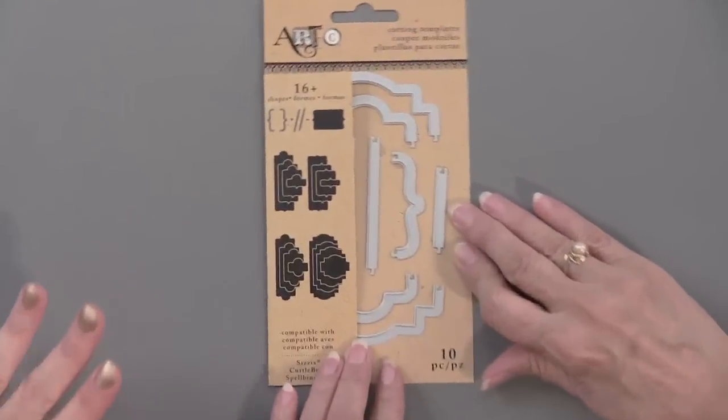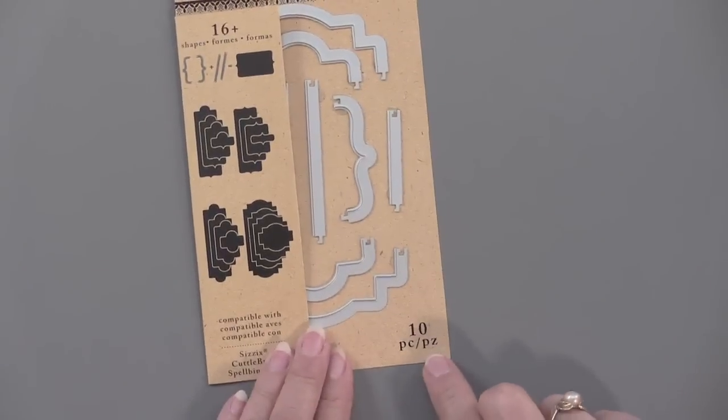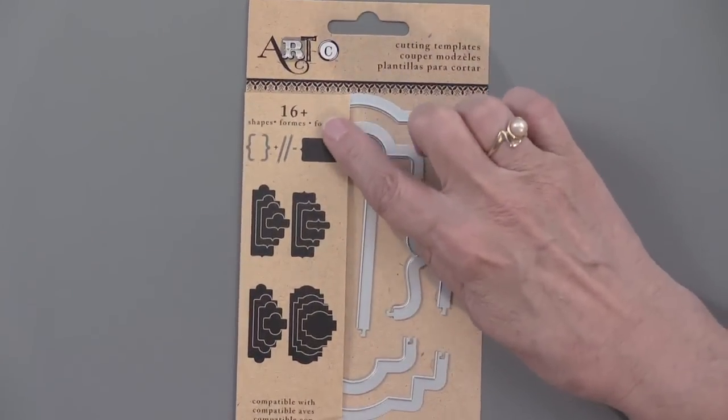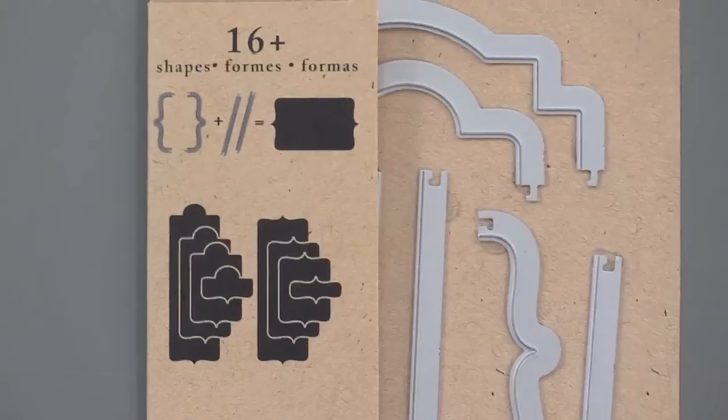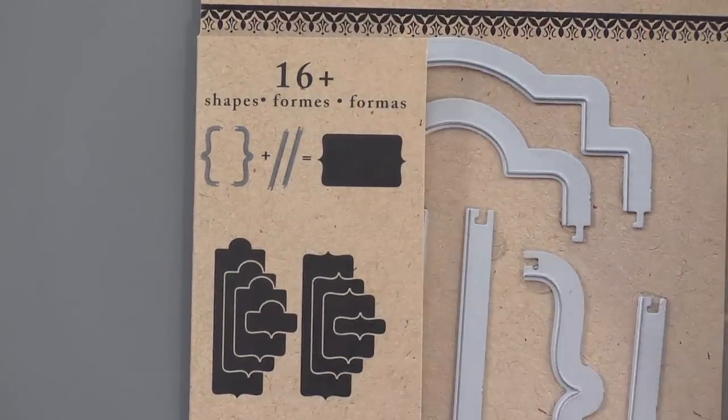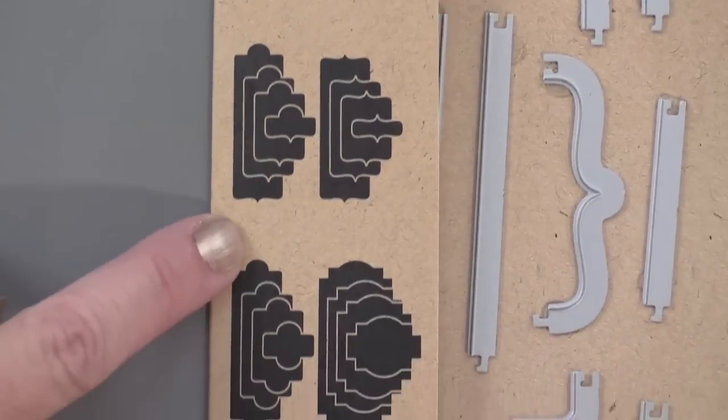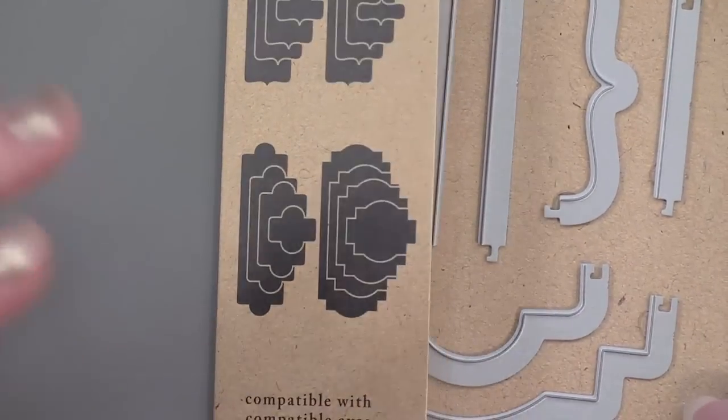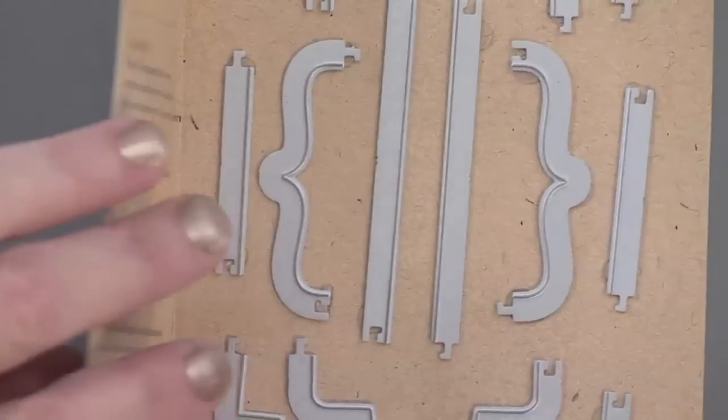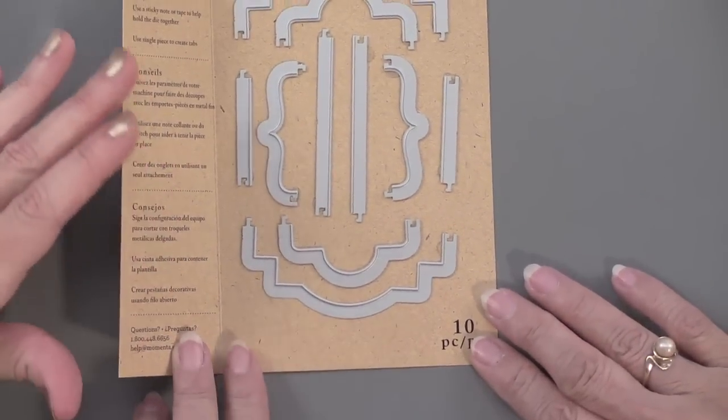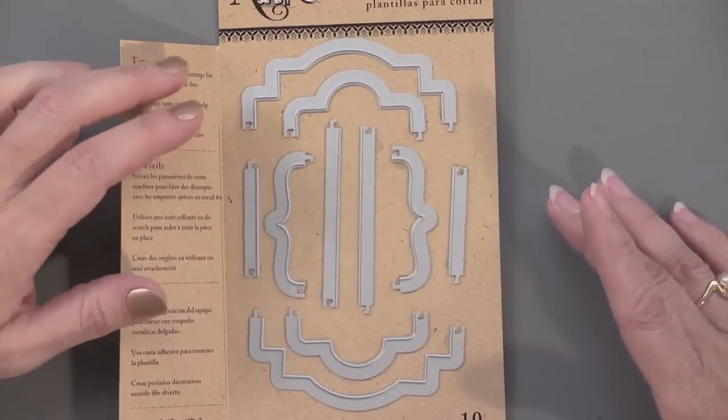There are 10 pieces, but this says there are 16 configurations. So 16 different shapes that you can make. They show you on the front all the different combinations you can make. The reason you can make those combinations is because it comes in pieces like this. You've got all the bits and pieces.